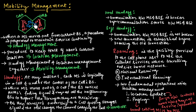Whenever a mobile station moves away from a base station, the base station notices that the mobile station is losing signal. The base station then queries neighboring base stations, and the mobile switching center transfers control to the nearest base station with the strongest signal. This process is known as handoff.